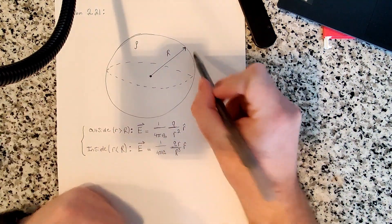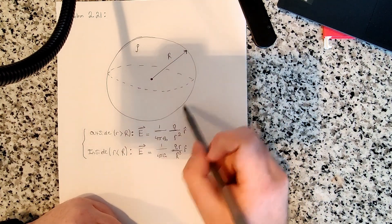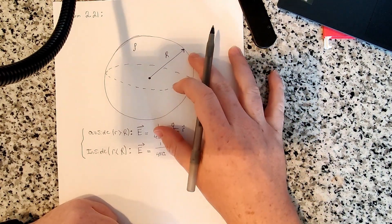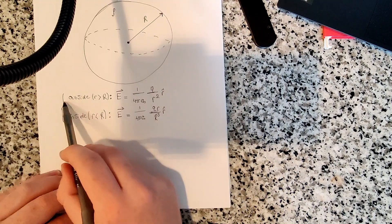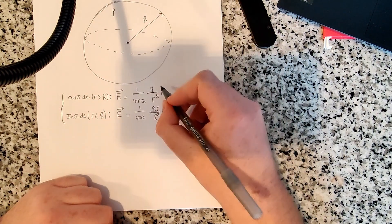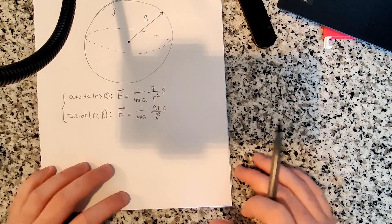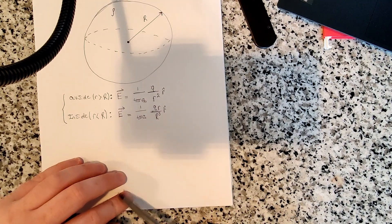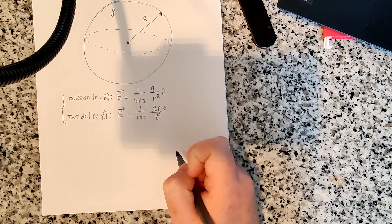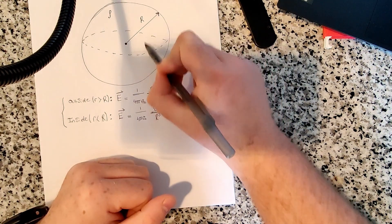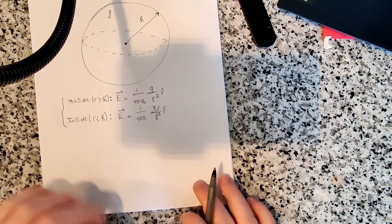I've drawn a simple diagram. We have a solid sphere of radius big R, charge density rho, total charge little q. I've gone ahead and written the electric fields in the regions we're going to consider. You can figure these out quickly using Gauss's law — we've done these problems before. So I've just copied them down since we're going to be using them. We need the electric field inside the sphere and outside the sphere, because we have to consider both regions.